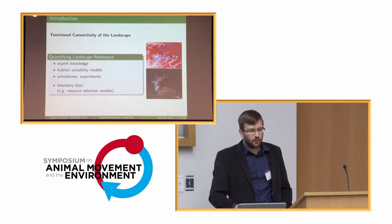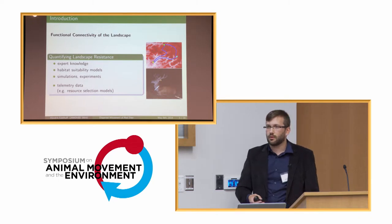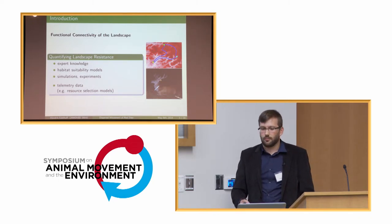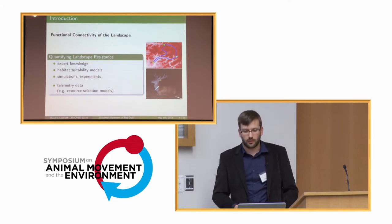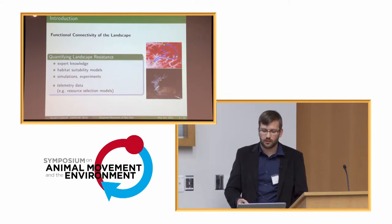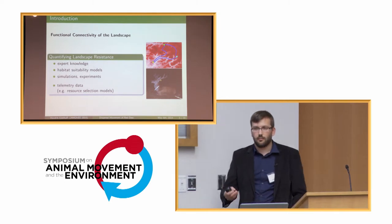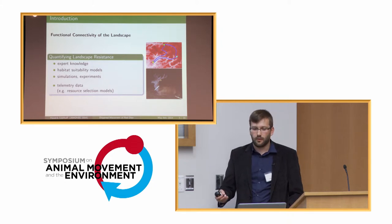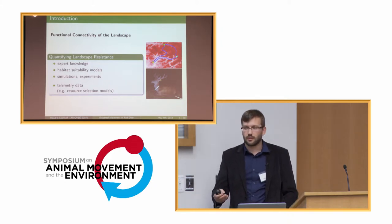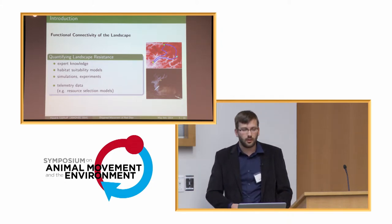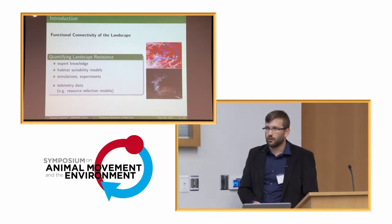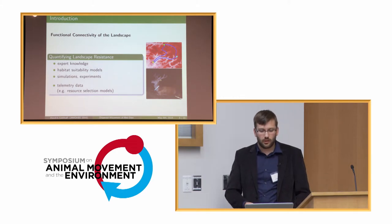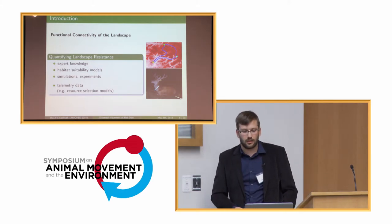How far can we model landscape connectivity, especially the functional connectivity of a landscape? This is usually done by modeling or quantifying landscape resistance towards movement of the organism in focus — essentially assigning to different types or structures in the landscape a value of high or low resistance towards movement. This is mostly done using expert knowledge, literature, or habitat suitability models.